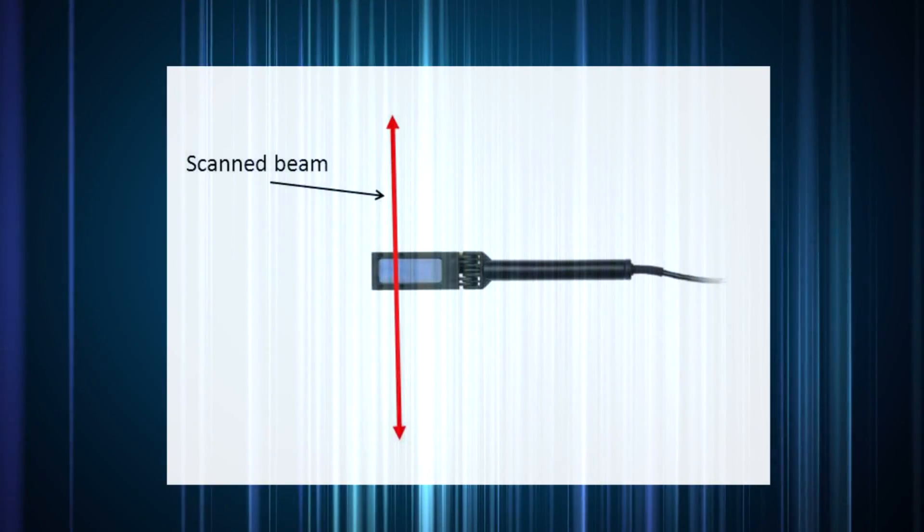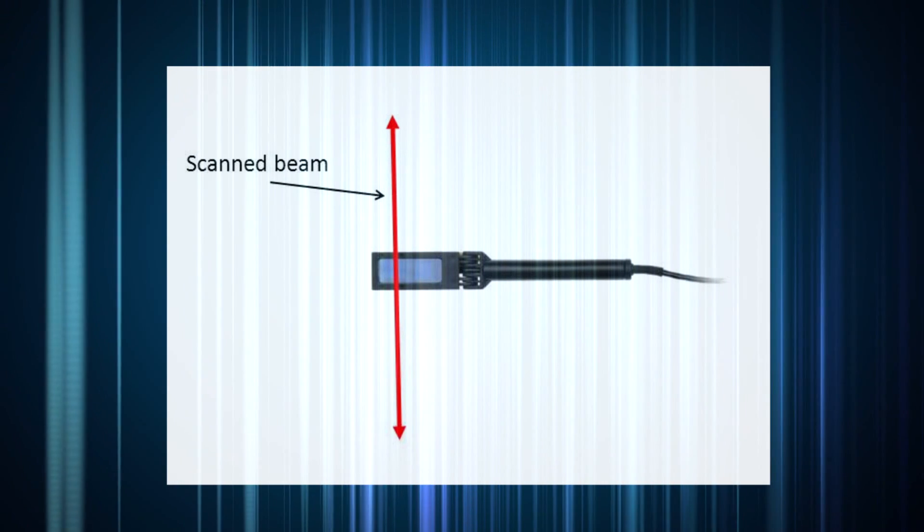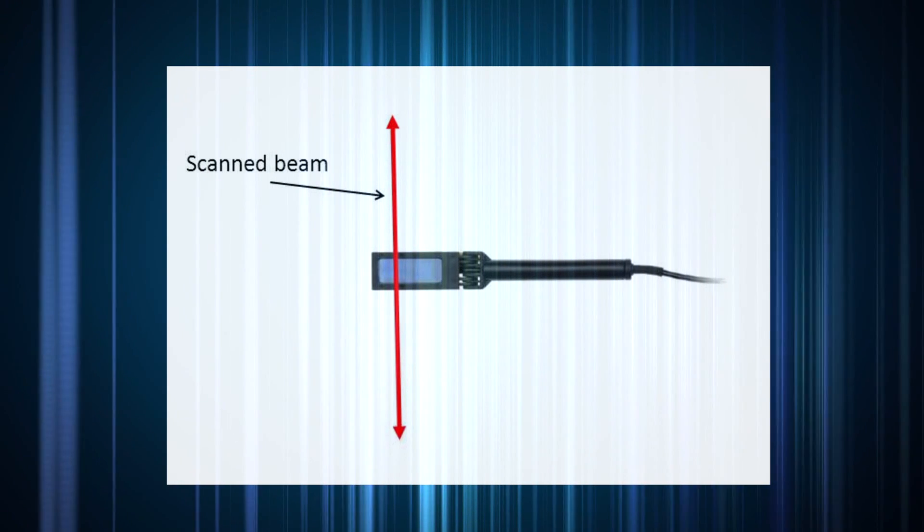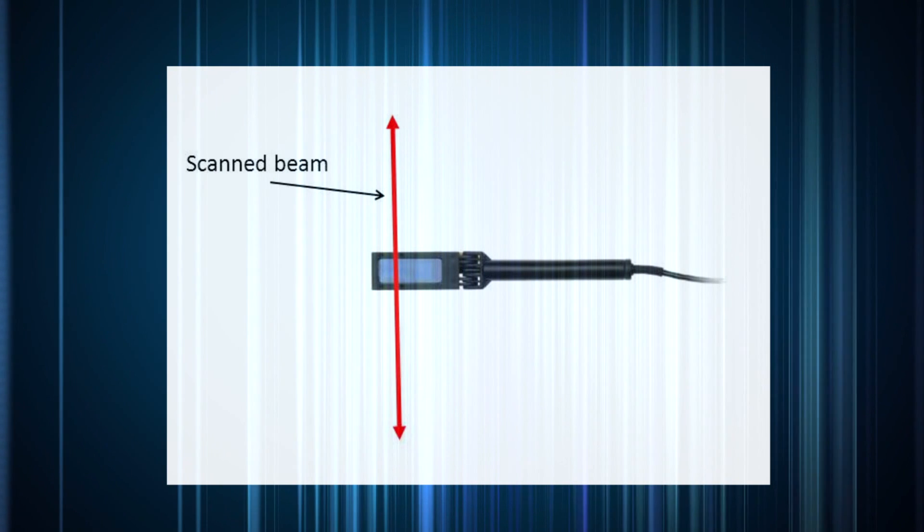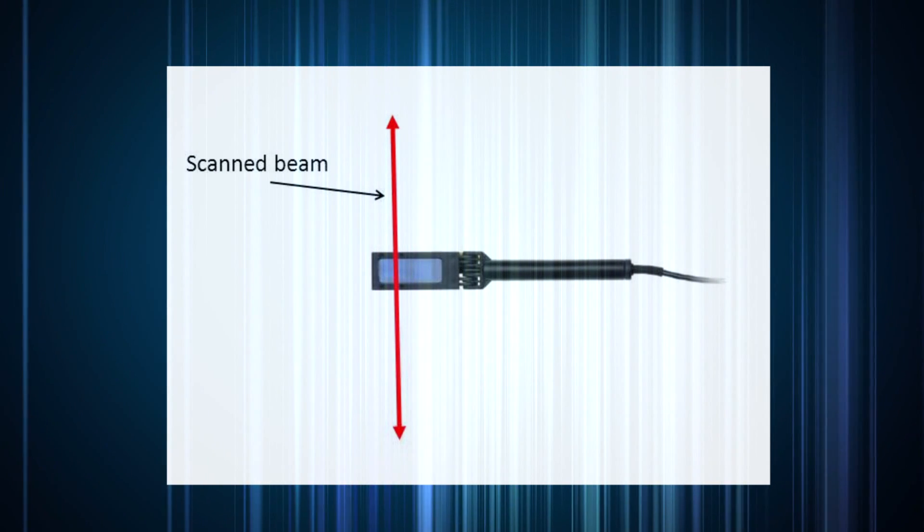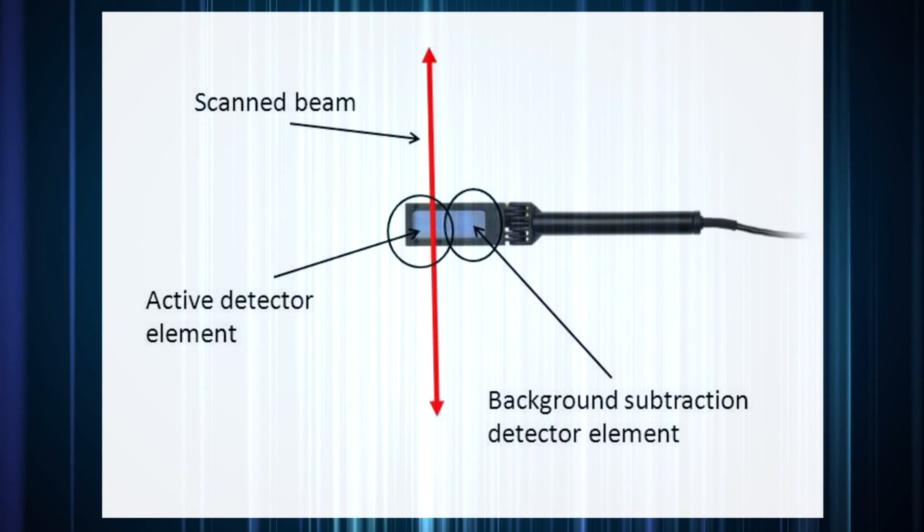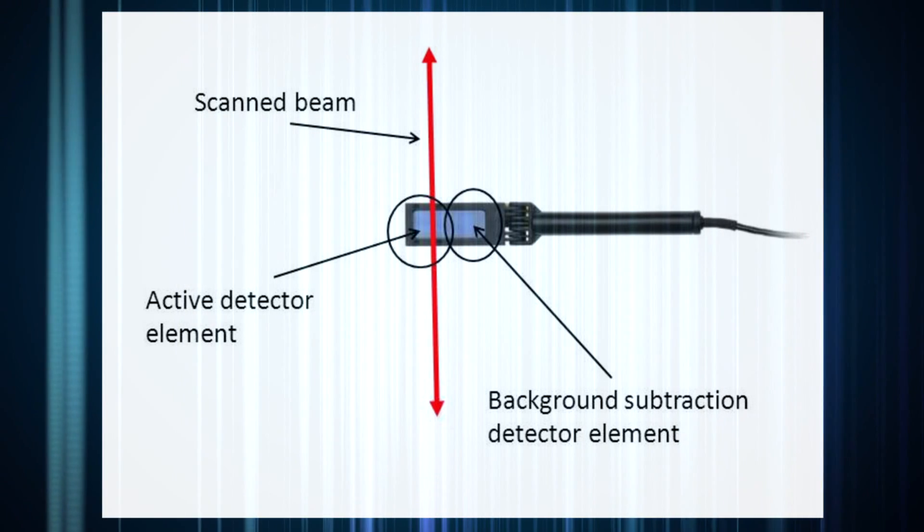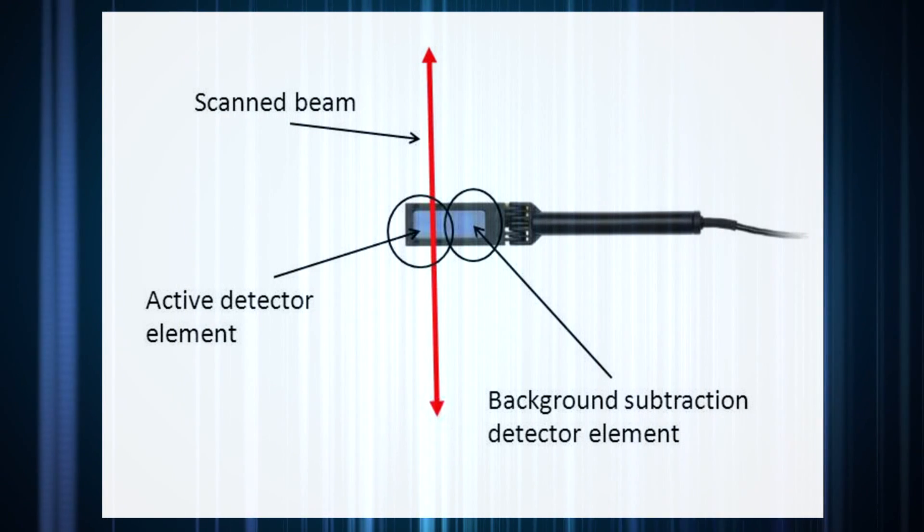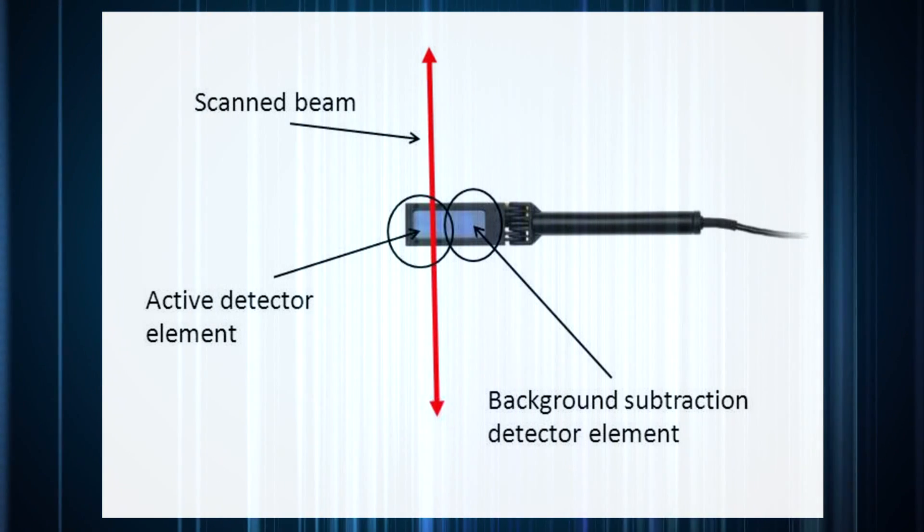Here's how it's used. The beam is scanned across the outer detector element as shown here. The inner detector provides background light subtraction. You choose the wavelength setting and power scale as for any standard photodiode-based power sensor, and you measure.